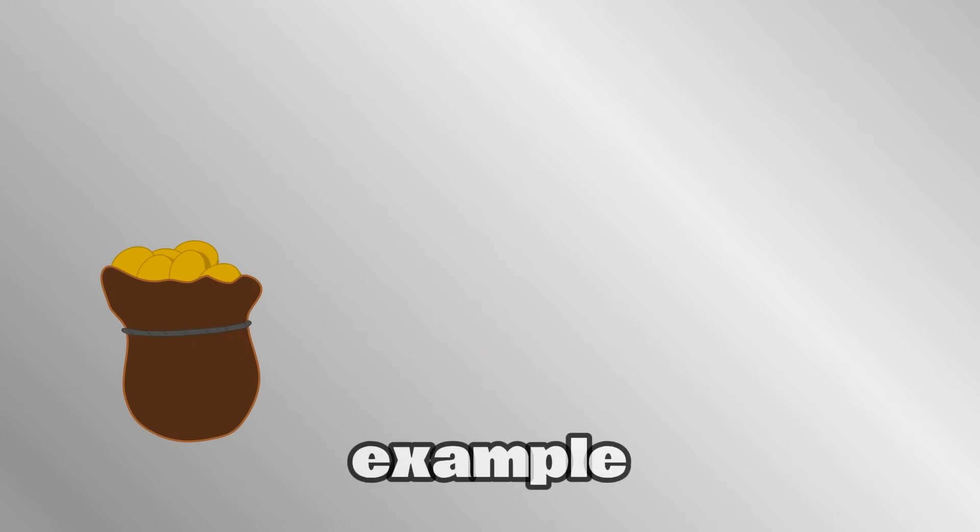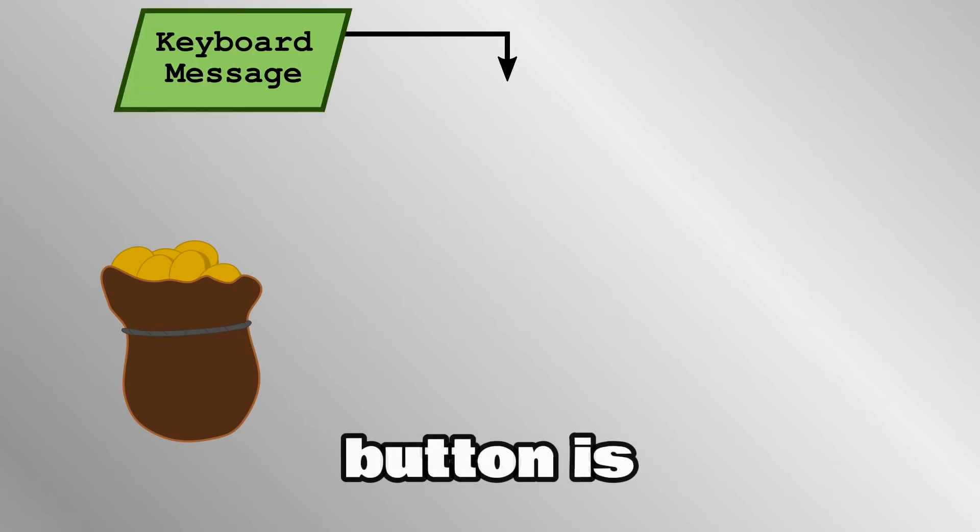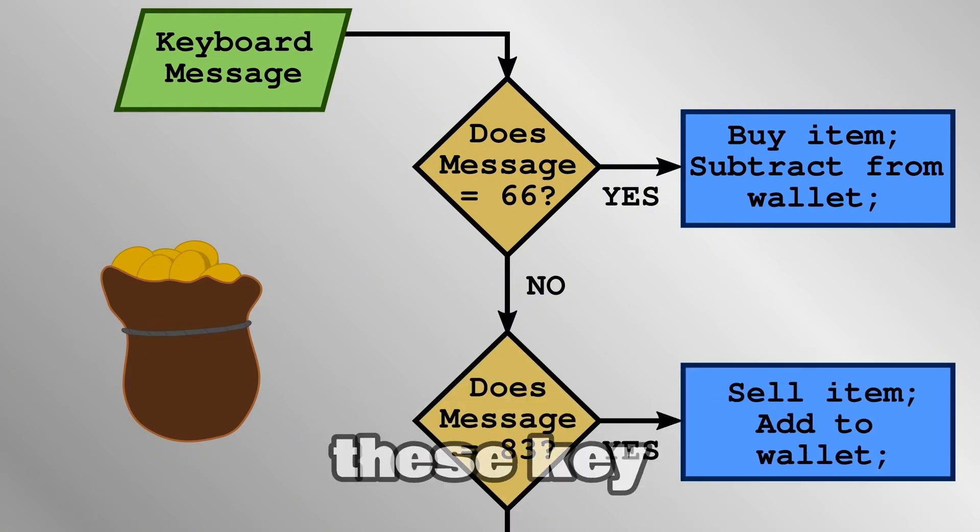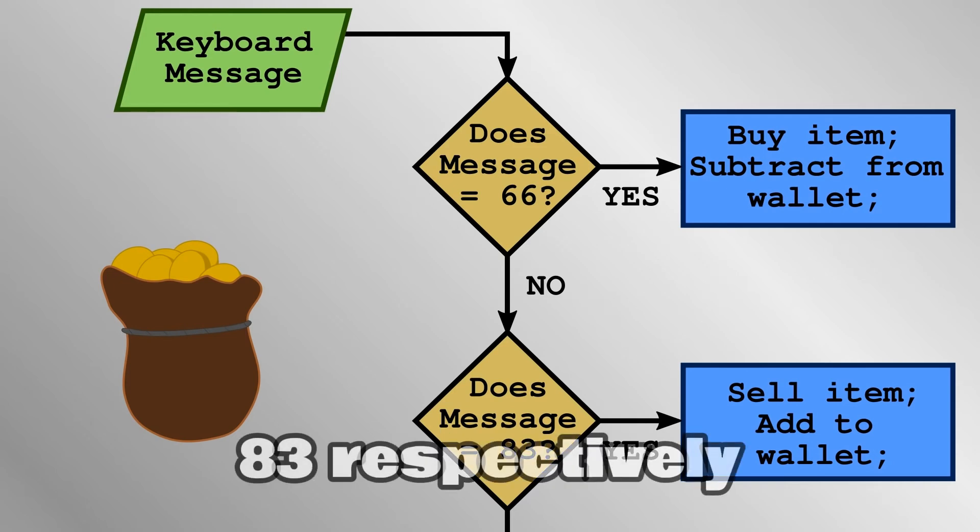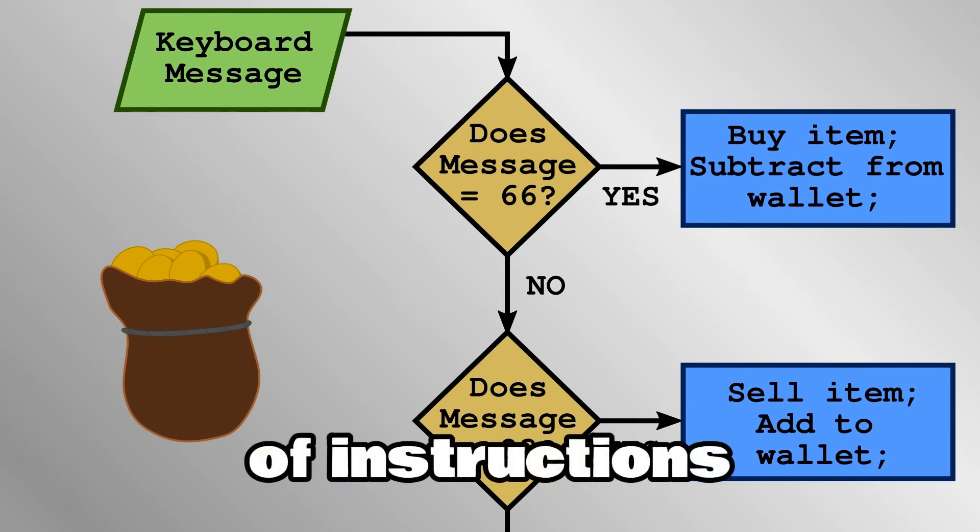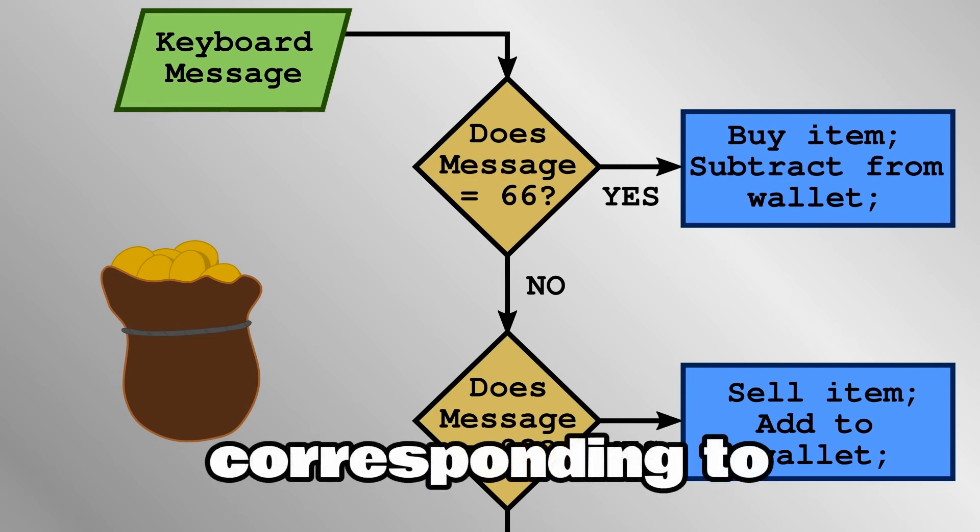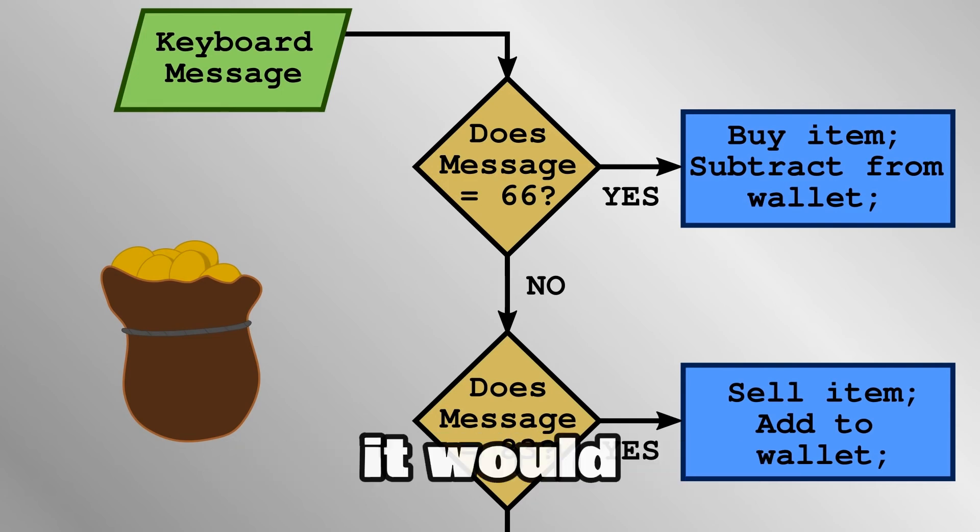In our video game example, imagine that the B button is used to buy things and the S button is used to sell. In Windows, these key presses have corresponding decimal numbers 66 and 83 respectively. In terms of instructions, the game would have conditional jumps based on the value of the last keystroke. If the keystroke value is 66, then a computer would jump to a set of instructions corresponding to buy. If 83, it would jump to instructions corresponding to sell.